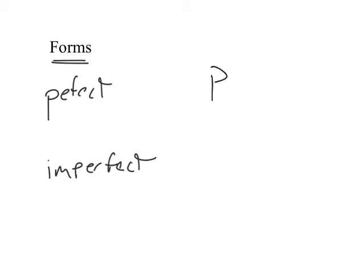The third thing to attend to in verbs is their form. There's two main forms that we call the perfect or the imperfect. Now the perfect of katal is katal. And so that's he has killed or he killed.